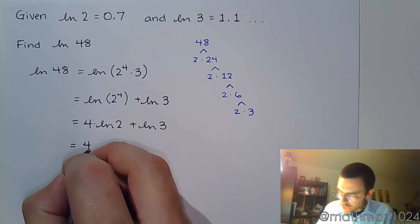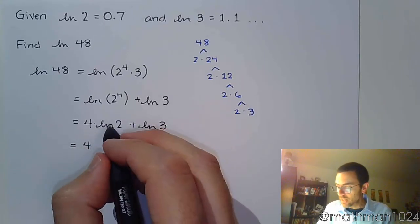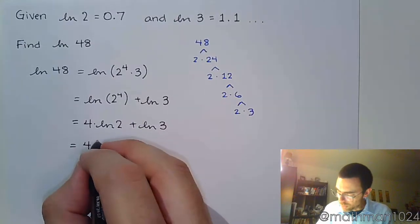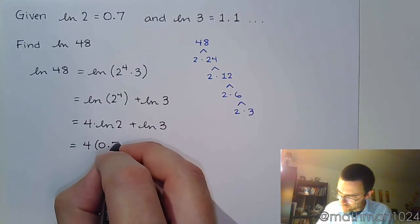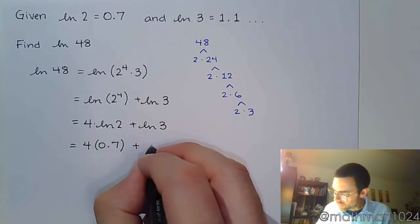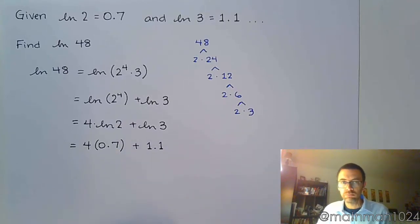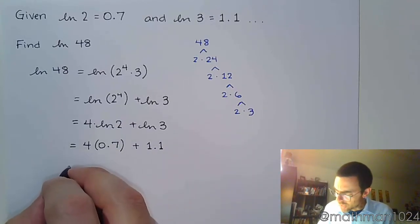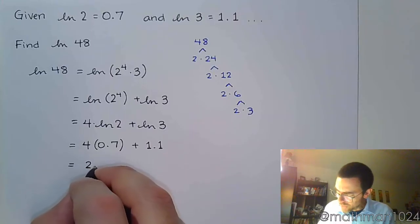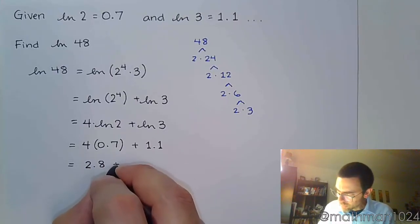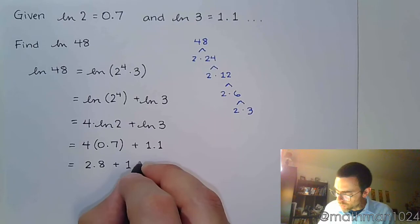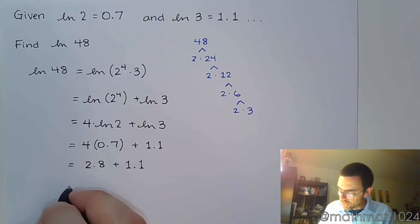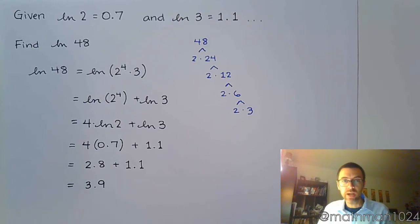So this is 4 times, this is where you make your substitution. The natural log of 2 is 0.7, and the natural log of 3 is just 1.1. And this is stuff that we can easily do by hand. So this is 2.8, and the natural log of 3 is 1.1. So it tells us that the natural log of 48 is 3.9.